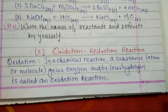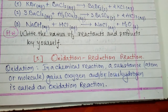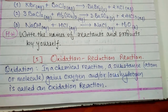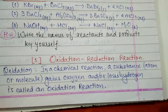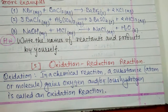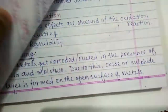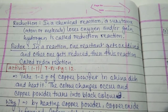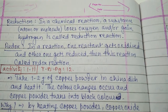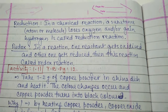Now, oxidation and reduction reactions. In oxidation, a substance, atom, or molecule gains oxygen and/or loses hydrogen. If one compound gains oxygen or loses hydrogen in a chemical reaction, it is called an oxidation reaction. In reduction, a substance, atom, or molecule loses oxygen and/or gains hydrogen — opposite to oxidation.